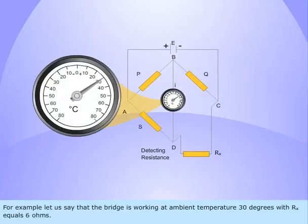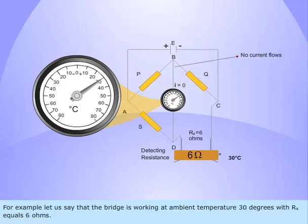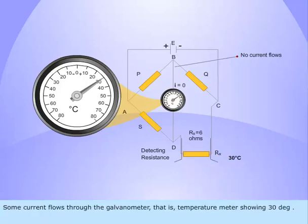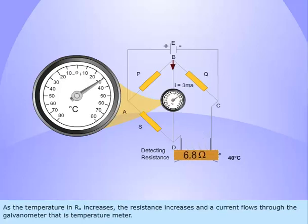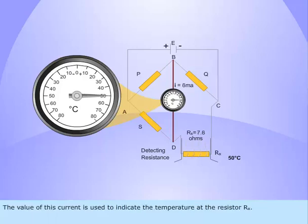For example, let us say that the bridge is working at ambient temperature 30 degrees with Rx equals 6 ohms. Some current flows through the galvanometer, i.e. temperature meter, showing 30 degrees. As the temperature in Rx increases, the resistance increases and a current flows through the galvanometer, i.e. temperature meter. The value of this current is used to indicate the temperature at the resistor Rx.